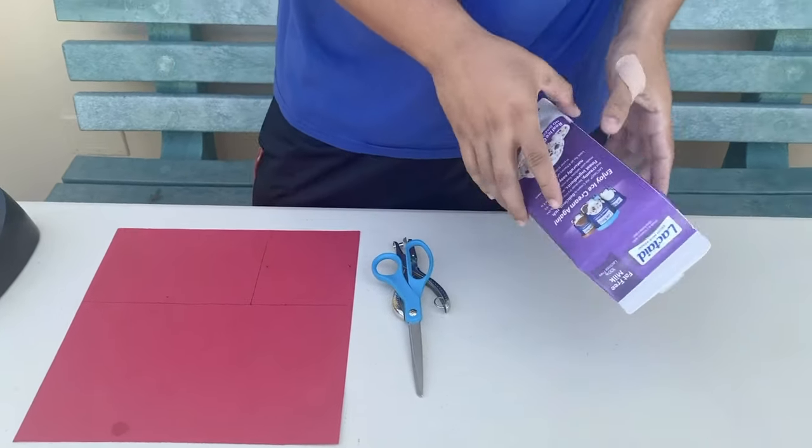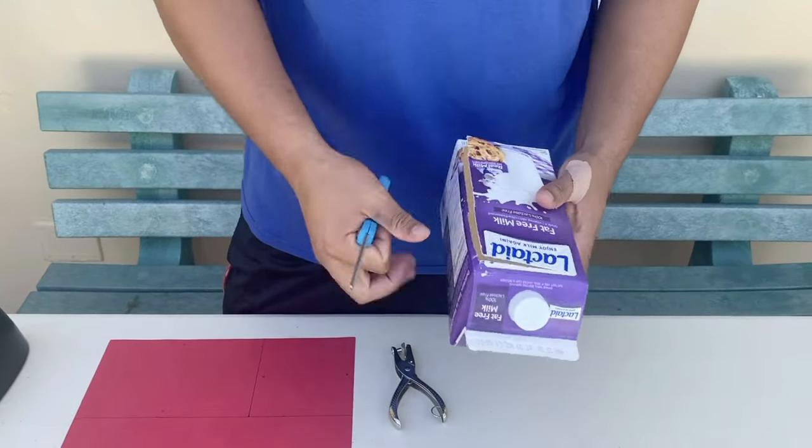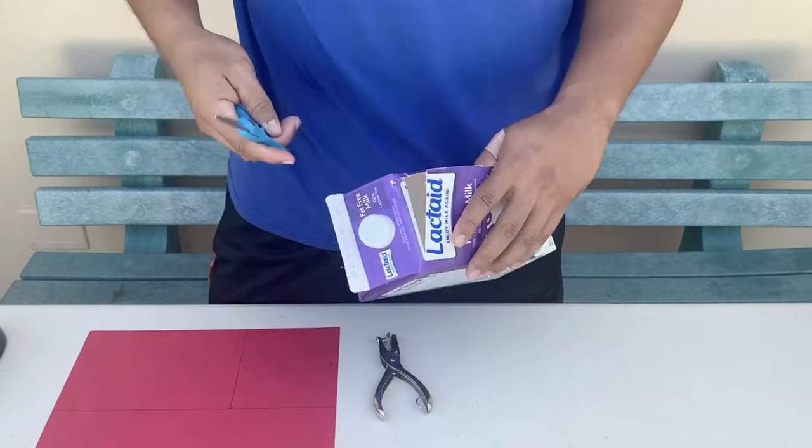First we're going to take the milk carton and we're going to cut a hole in the top. I already started, so I'm going to finish that.